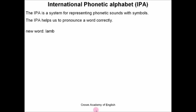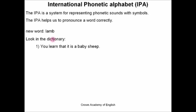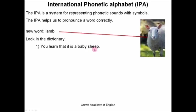For example, we see a new word in a book. We see this word in a book and we do not know what it means and we do not know how to pronounce it. So the first thing we do is we look in the dictionary, and first of all we look at the definition and we learn that it is a baby sheep. So this word here is a baby sheep.